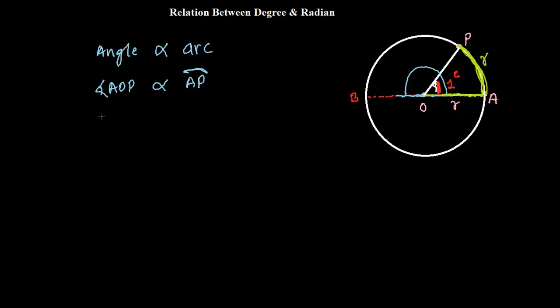And when we have angle AOB, that will be proportional to the arc APB. Arc APB. I am talking about this much arc. When we have angle AOB, AOB angle is proportional to the arc APB.